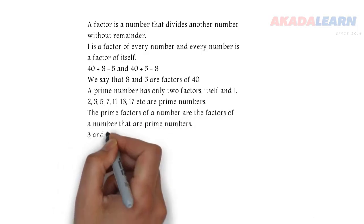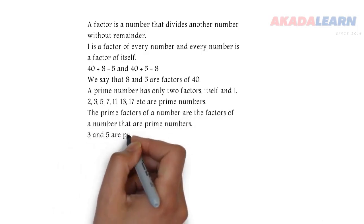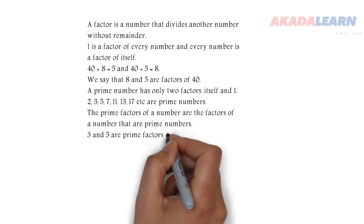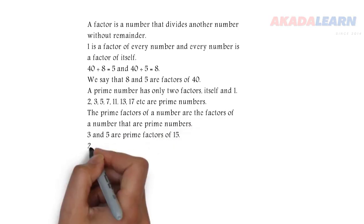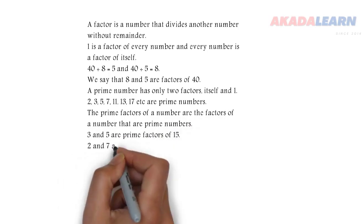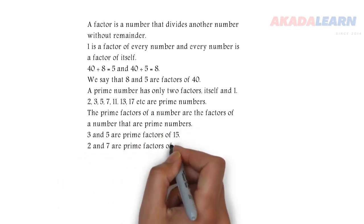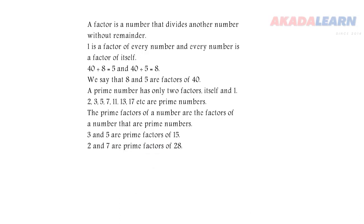Now let's see the definition of prime factors. The prime factors of a number are the factors of a number that are prime numbers. For example, 3 and 5 are prime factors of 15, and 2 and 7 are prime factors of 28.